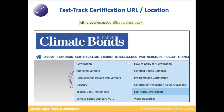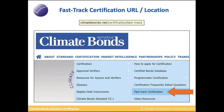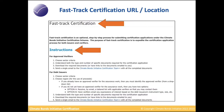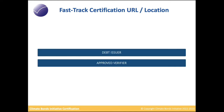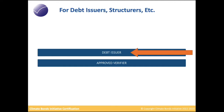Alternatively, go to our website, hover over 'Certification' in the drop-down, hover over 'Certification' again, and then choose 'Fast Track Certification.' You'll come to a page that shows Fast Track Certification instructions, and a little lower on the same page you'll see two options: one for debt issuers and one for approved verifiers.